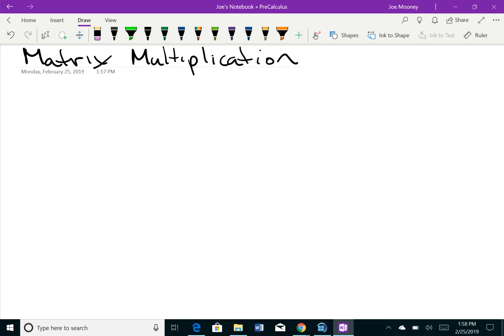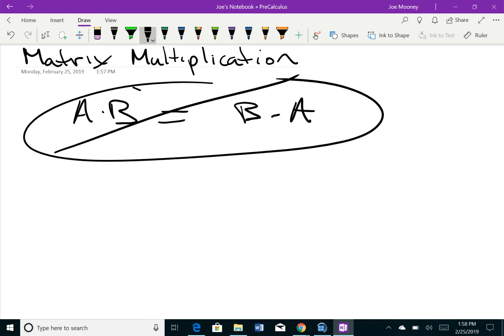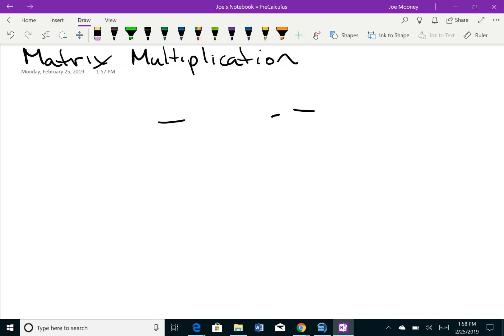Not the same with matrices. Matrix A times matrix B cannot be guaranteed to equal matrix B times matrix A. It may be, but it's not guaranteed. It may not even be possible. So what does that mean? Let's go in and have a look.